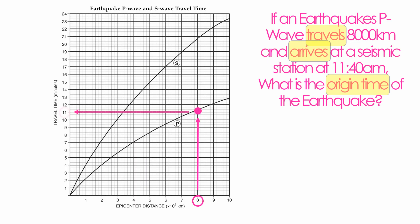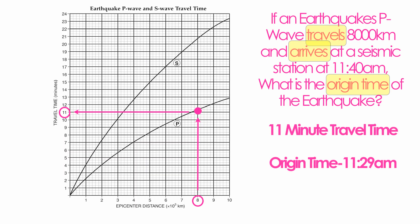It turns out to be about eleven minutes. If the P-Wave arrived at 11:40 but it took eleven minutes to travel the eight thousand kilometers, you take eleven hours and forty minutes and subtract the eleven-minute travel time. You should come up with an origin time of 11:29. The earthquake starts at 11:29 a.m., travels eleven minutes to reach you, and the P-Wave arrives at 11:40 — having traveled eight thousand kilometers.